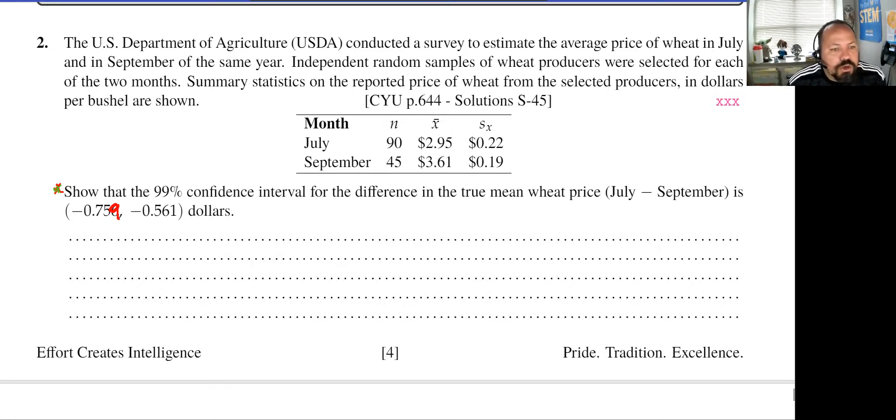Well, what do we know our confidence interval for a difference in means is? We know that our confidence interval is going to be x-bar 1 minus x-bar 2 plus or minus my critical value